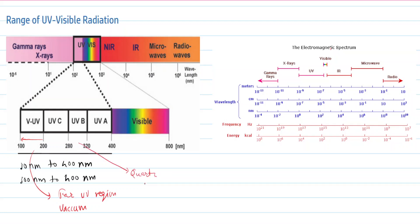The region above 200 nanometers is also called the quartz region, and it is useful in ultraviolet spectroscopy. So this region — about 200 nanometers and above — is used in ultraviolet spectroscopy. The visible radiation has a wavelength from 400 nanometers up to 800 nanometers.